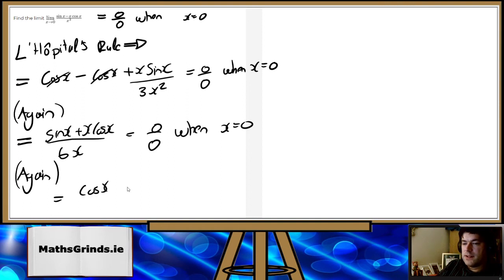And that becomes cos x plus cos x minus x sine x over 6. And that's equal to 2 over 6, which is 1 over 3, when x is 0.